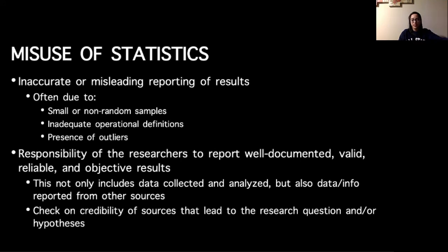Generally speaking, it's the responsibility of the researcher to report well-documented, valid, reliable, and objective results. So this not only includes the data they've collected and analyzed, but it also includes the data and information that they report from other sources. So when you do your literature review and you say, my data compared to these people's data in this way, the way that you report other people's results is important. If not, then you've misused your statistical analyses, you've misused statistical inference, and your conclusions are not necessarily valid anymore.